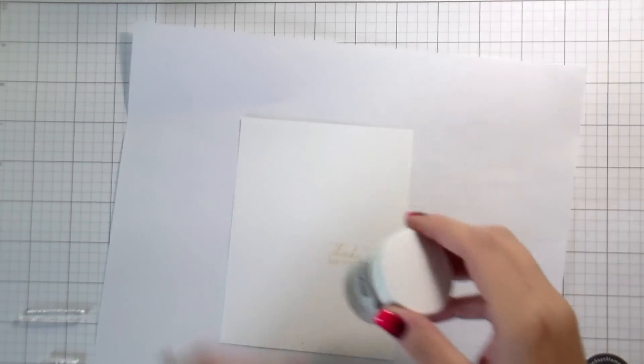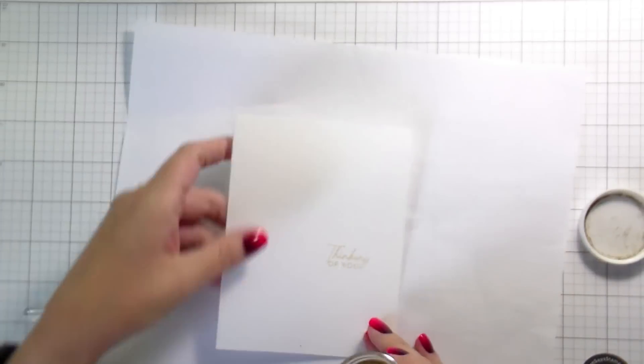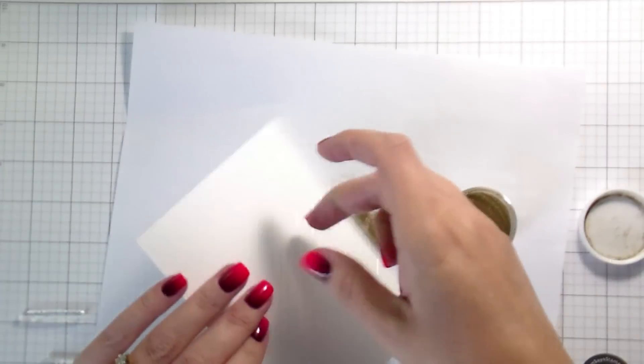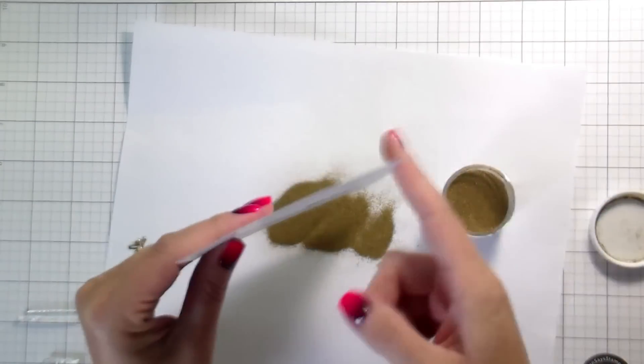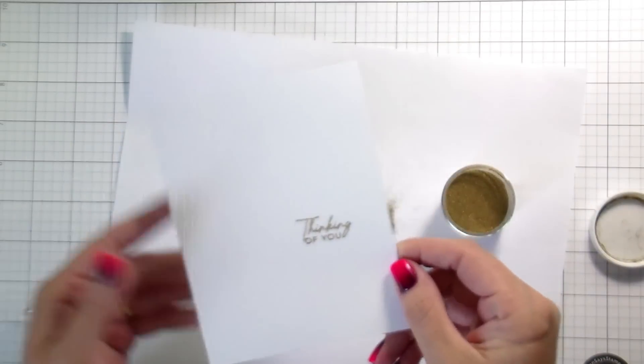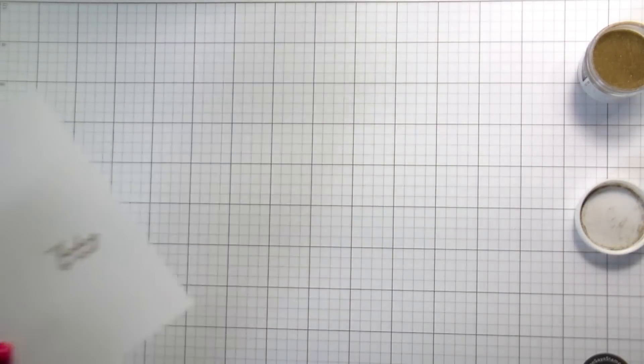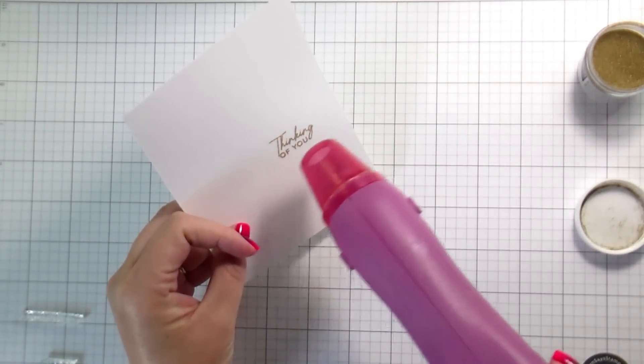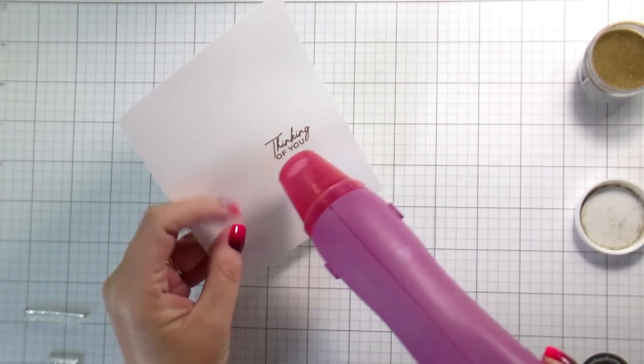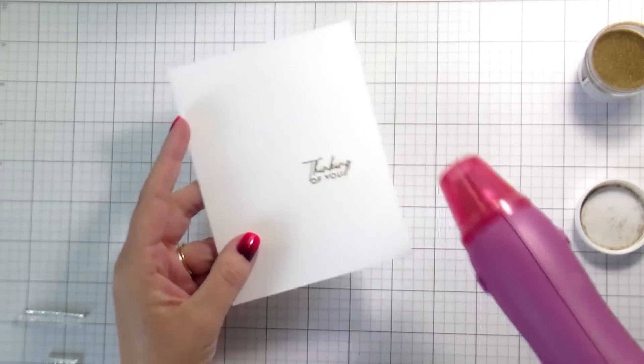I stamped it in gold pigment ink from Altenew. And then I am going to do some gold heat embossing because pigment ink takes so long to dry. You can stamp it and use it as is. It's just going to take a long time to dry if you don't heat set it. I like to use this one as a base for my gold heat embossing just because I think that it makes sure that my sentiment is solid in case I have any areas of embossing that don't stick.